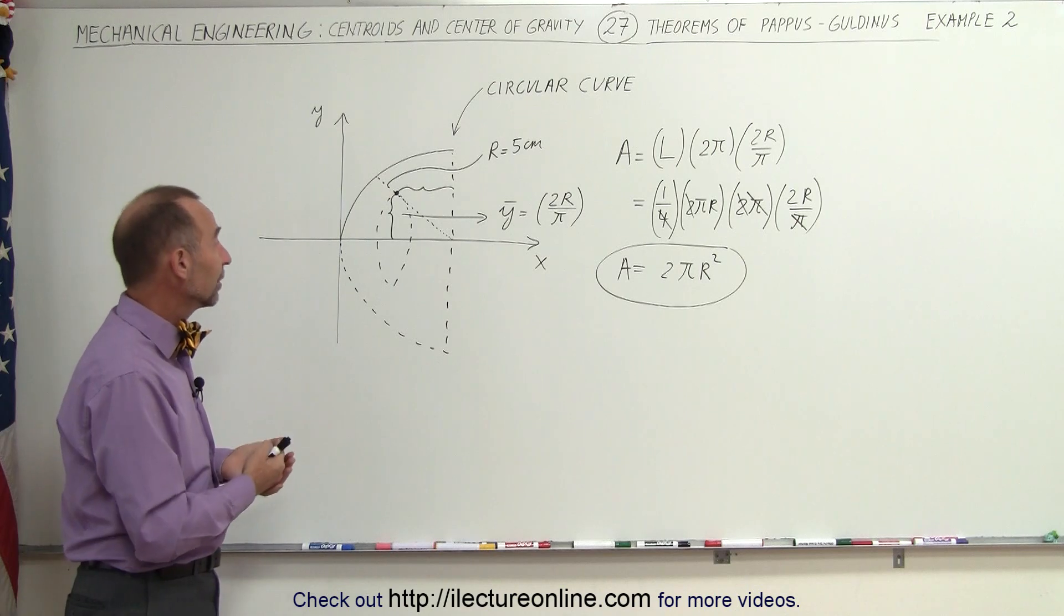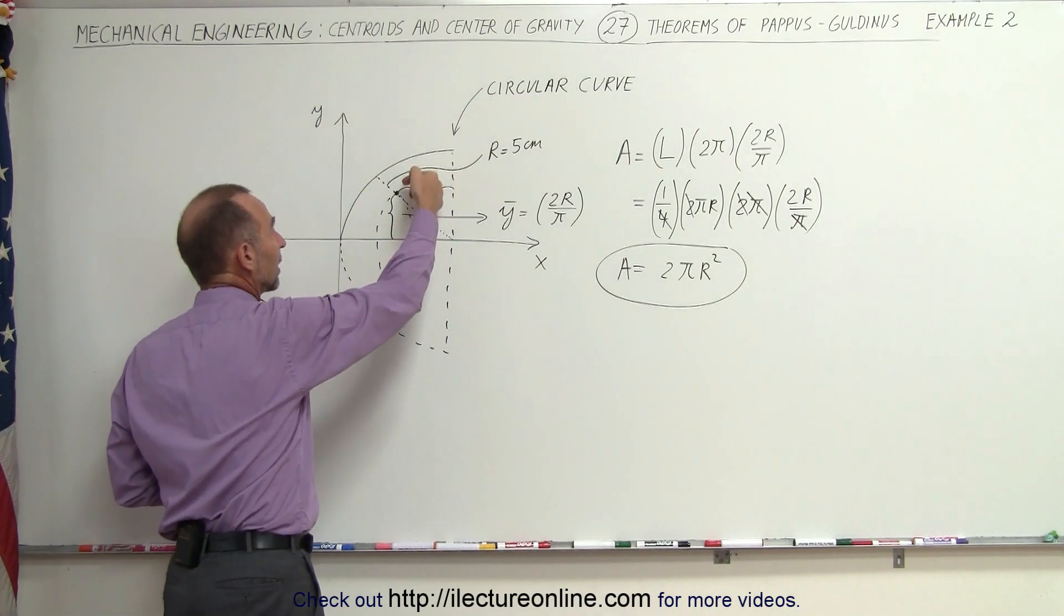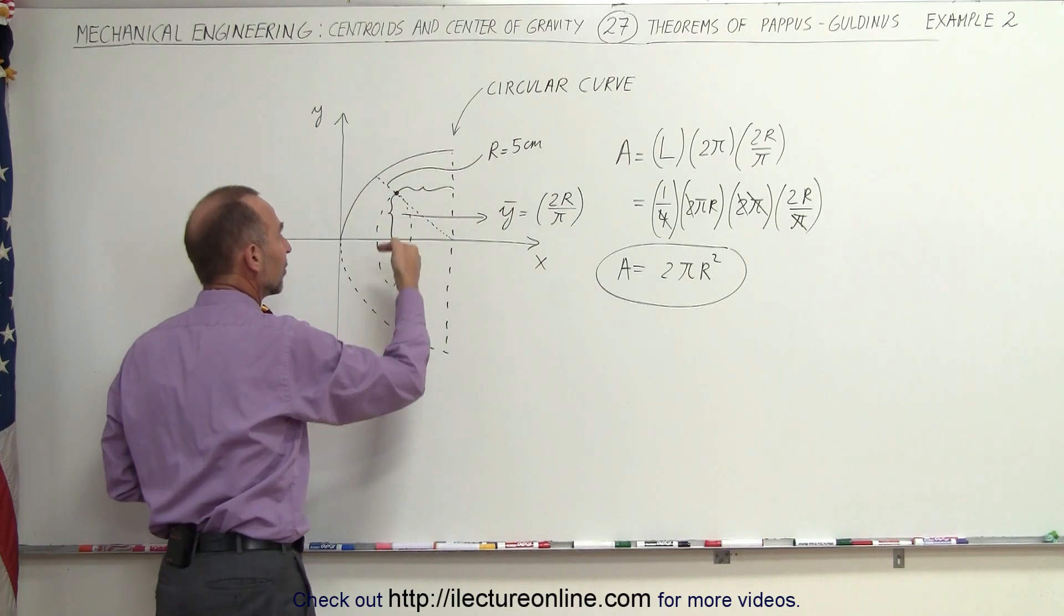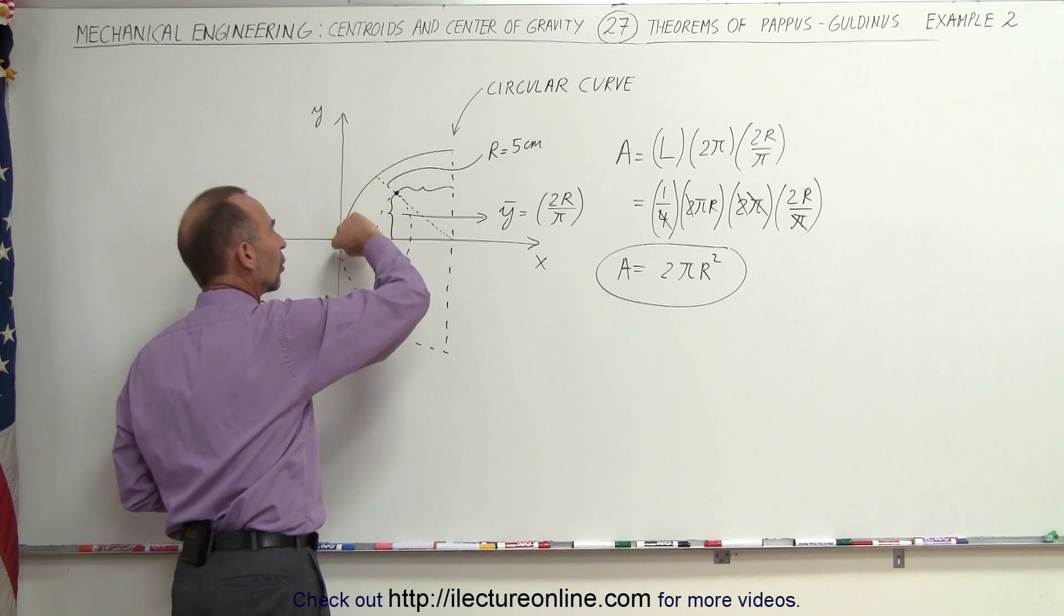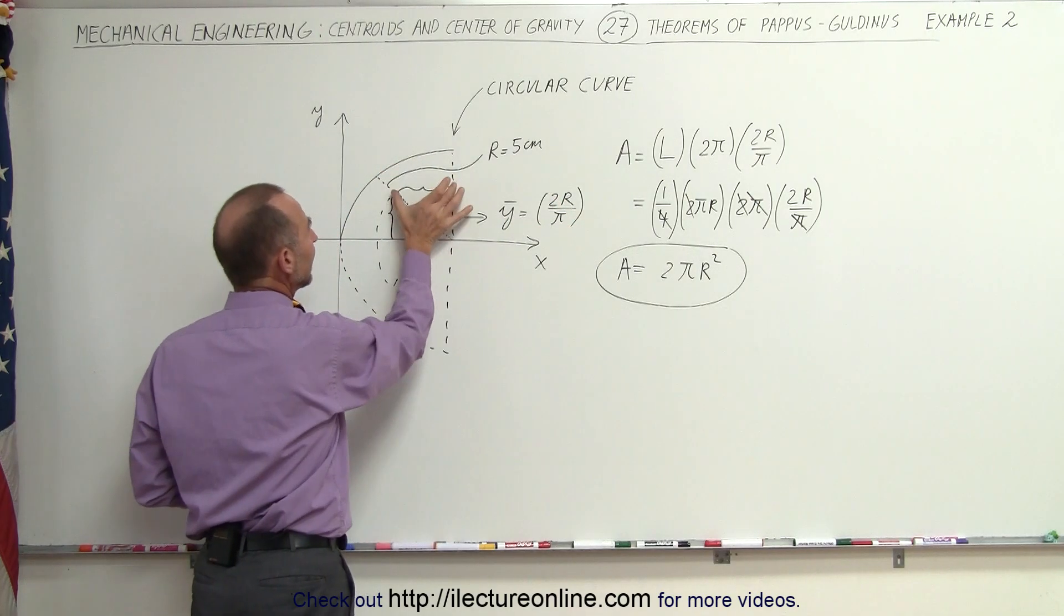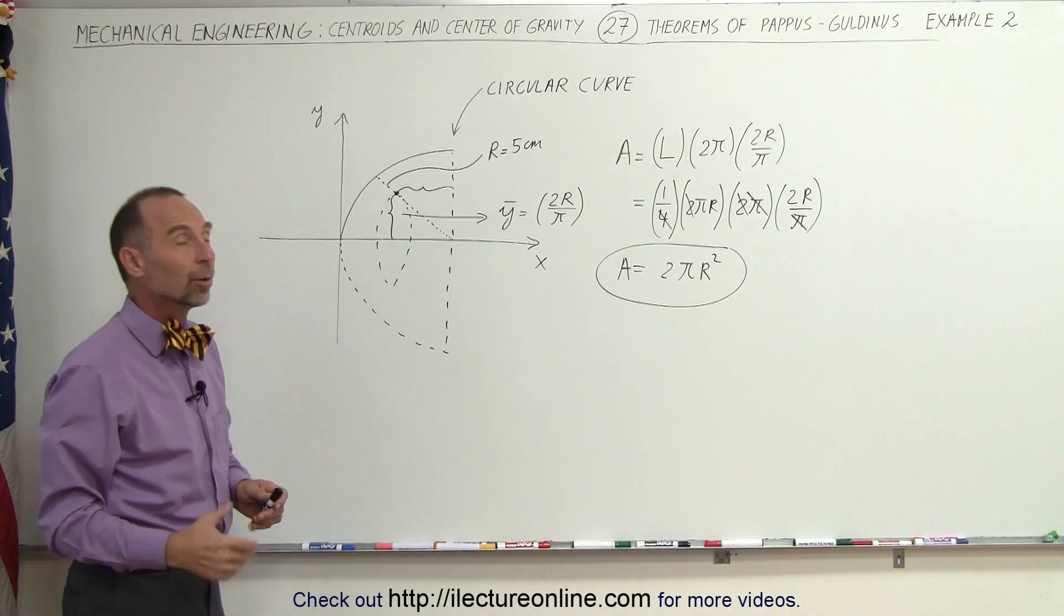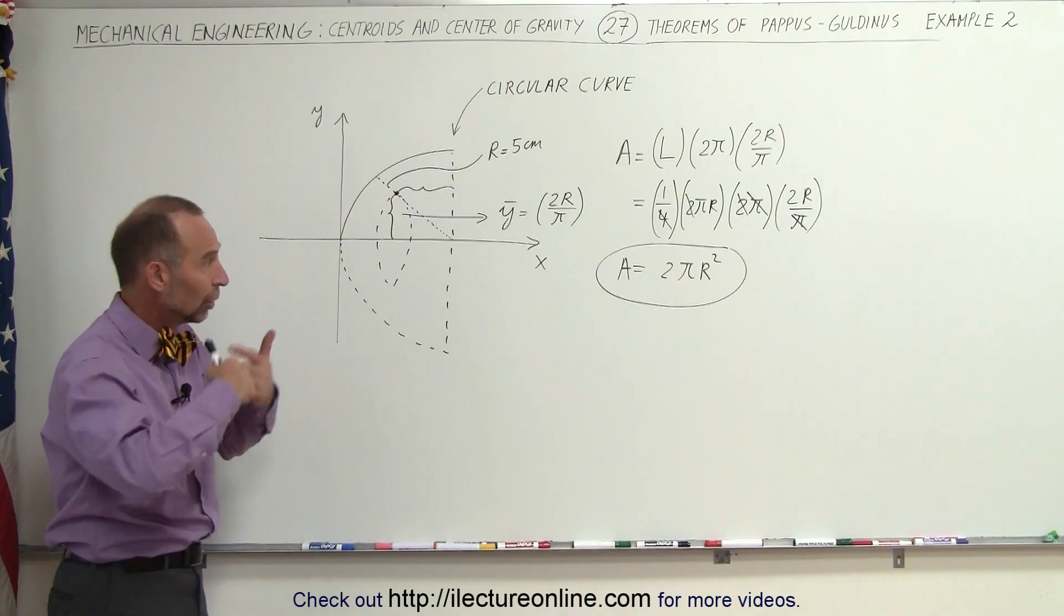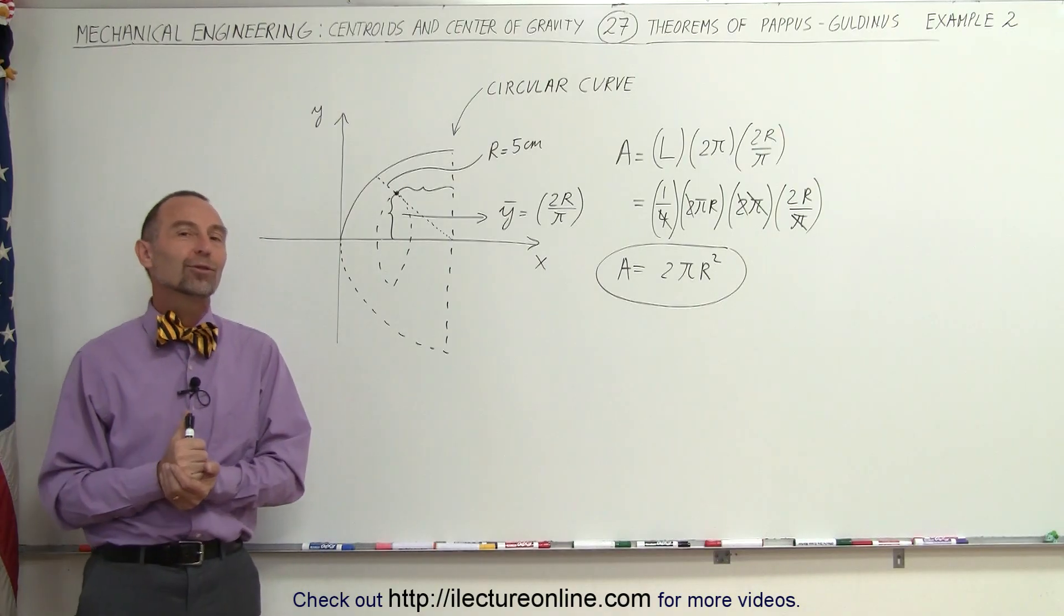Again, the theorem of Pappas-Guldinas is very straightforward. You take the length of the curve, you multiply that times the distance of the path taken by the centroid. You realize that the centroid of a quarter circle like that is equal to 2r, 2 times the radius of the circle divided by pi in either direction, either the y direction or the x direction like that. Then you multiply that times 2 pi to get the full path length of the centroid. And that's what gives you the area.